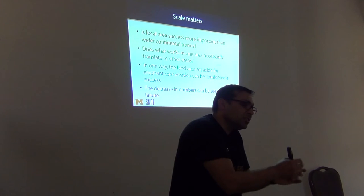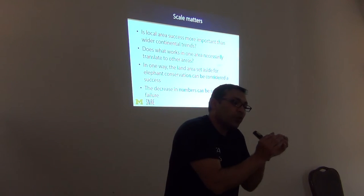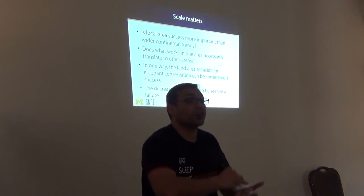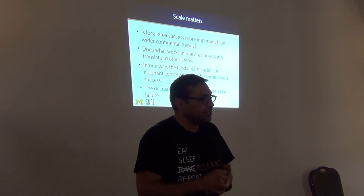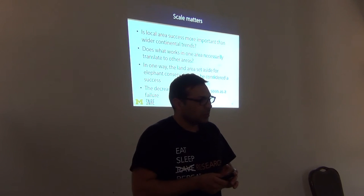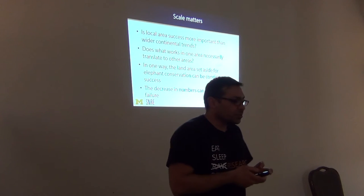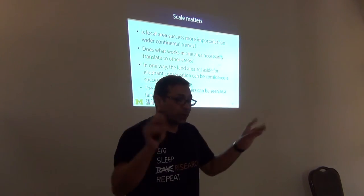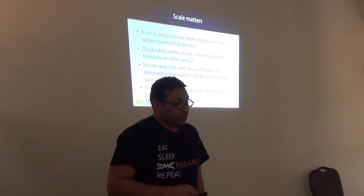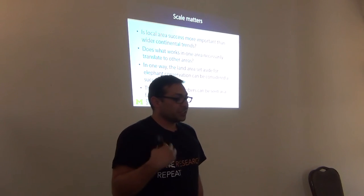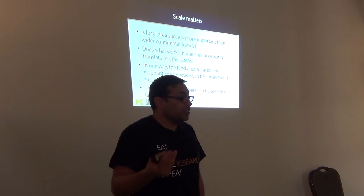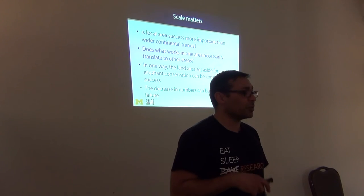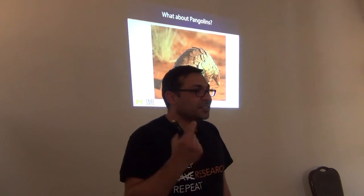Is the success of a local area more important than wider continental trends? It depends on how we define success. An idea often deployed in conservation success stories is that what has worked in one area will necessarily work in another — but the contexts are quite different. We can think about the land set aside for elephant conservation as being a success story, but the decrease in raw numbers as being a failure. But this is for charismatic megafauna — what if you were conserving pangolins, or something that is brown, stinky, and small, something that only a taxonomist can distinguish?